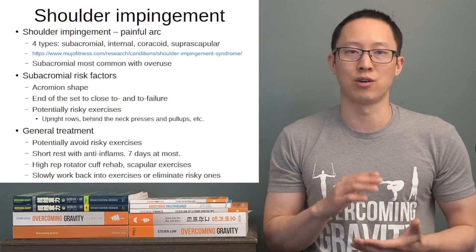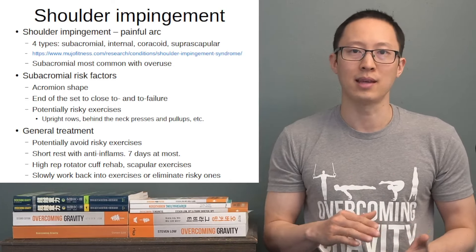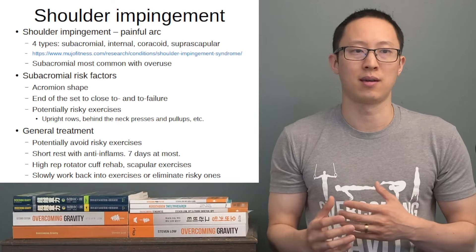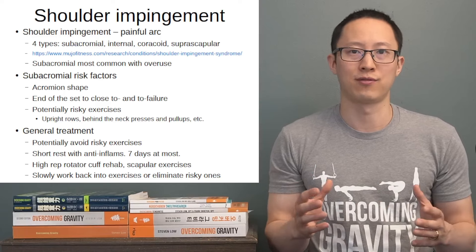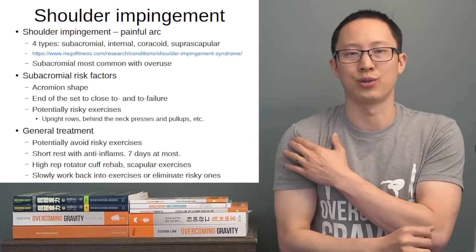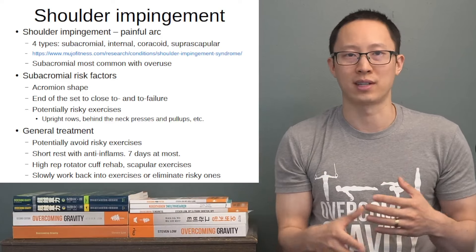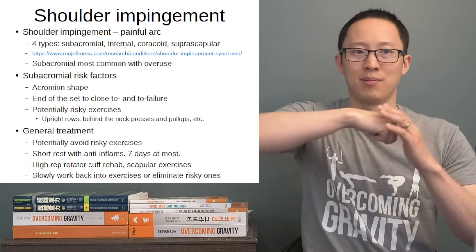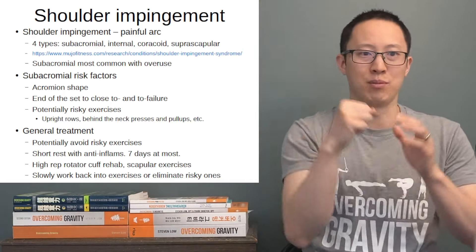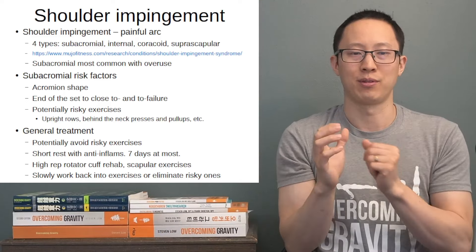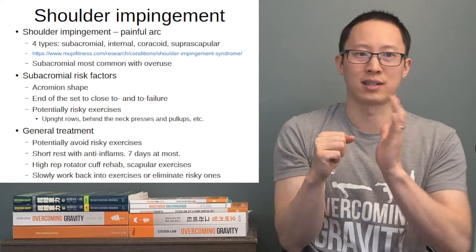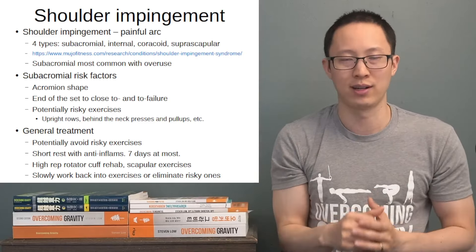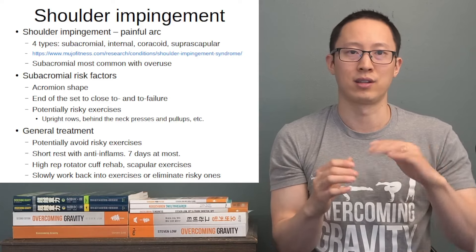High-rep rotator cuff rehab and scapular exercises are the main rehab resources to resolve shoulder impingement. The main reason is that you want endurance in the rotator cuff to handle fatigue at the end of sets. Usually go 15 to 20 reps with the rehab exercises, slowly increasing the sets and reps over time. Scapular exercises are included because scapular dysfunction can sometimes lead to potential impingement as well.